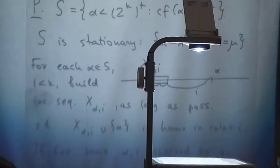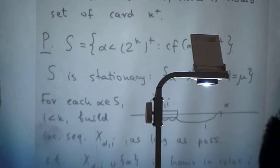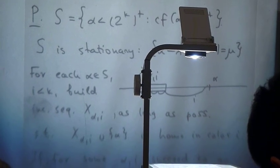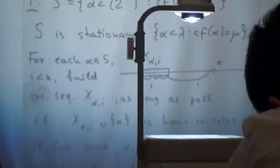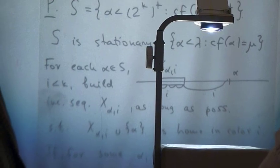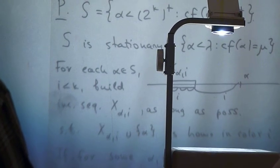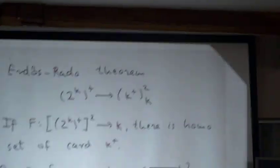This is a stationary set, as it is in general true that if lambda and mu are two regular cardinals, and mu is less than lambda, then the set of all ordinals alpha less than lambda, whose cofinality is mu, is a stationary set.